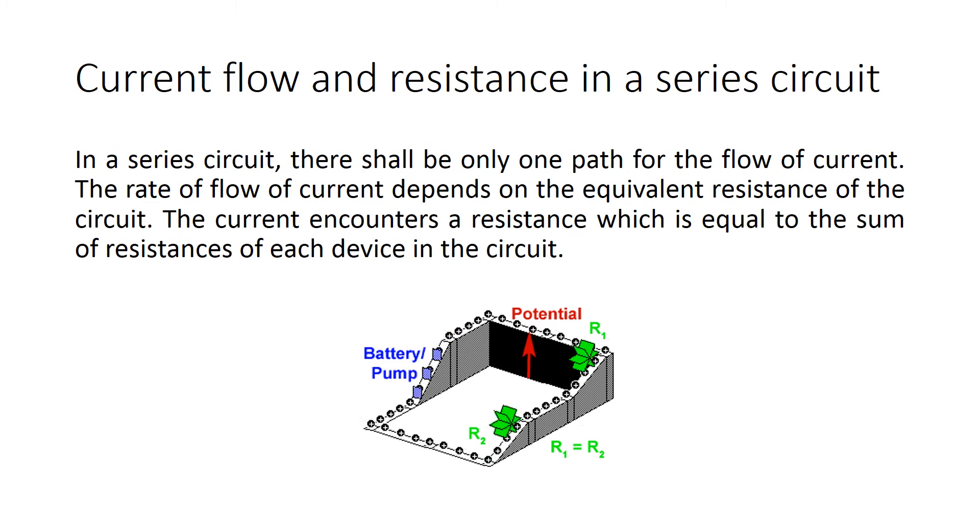Current flow and resistance in a series circuit. In a series circuit, there shall be only one path for the flow of current. The rate of flow of current depends on the equivalent resistance of the circuit. The current encounters a resistance which is equal to the sum of resistances of each device in the circuit.